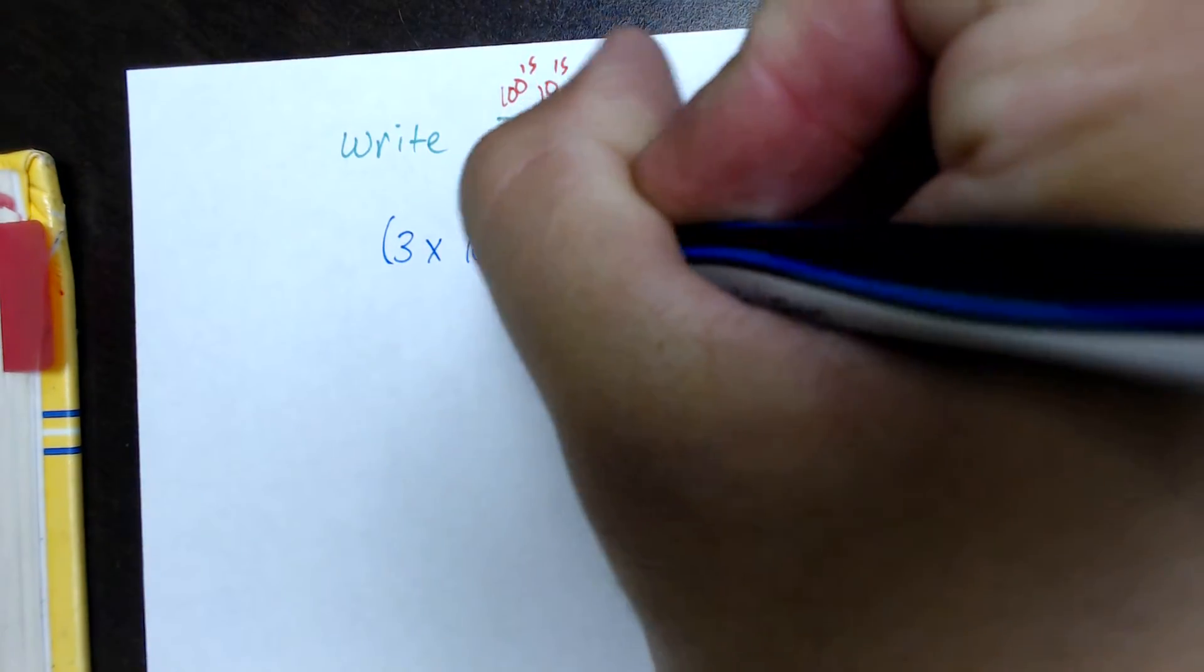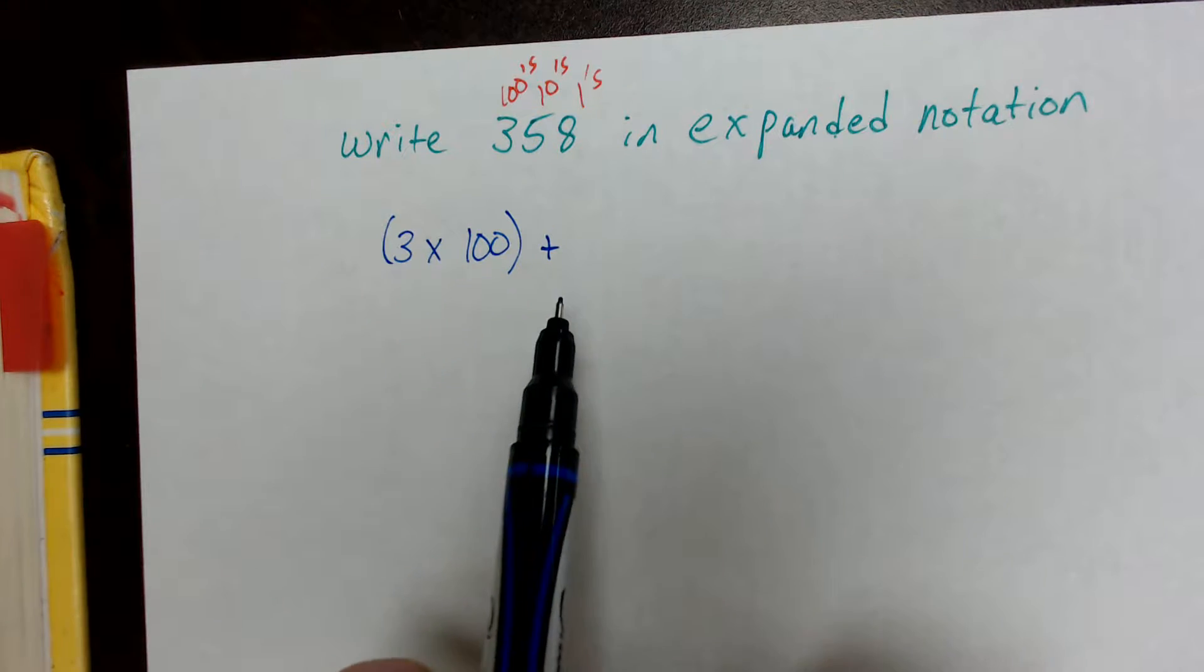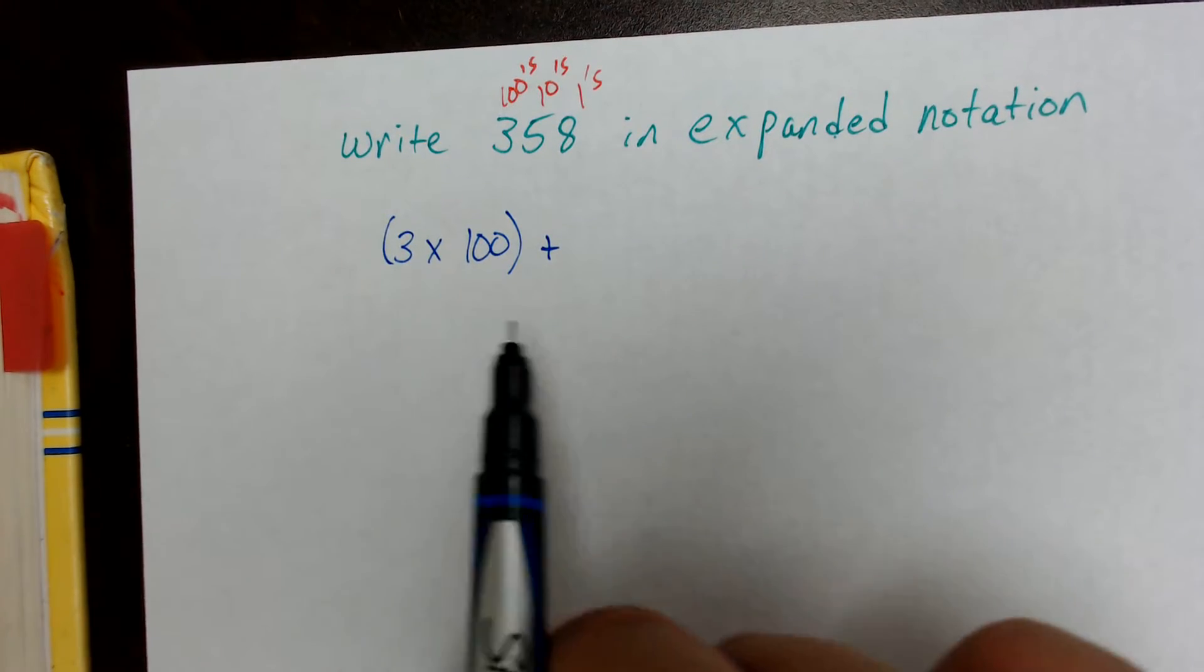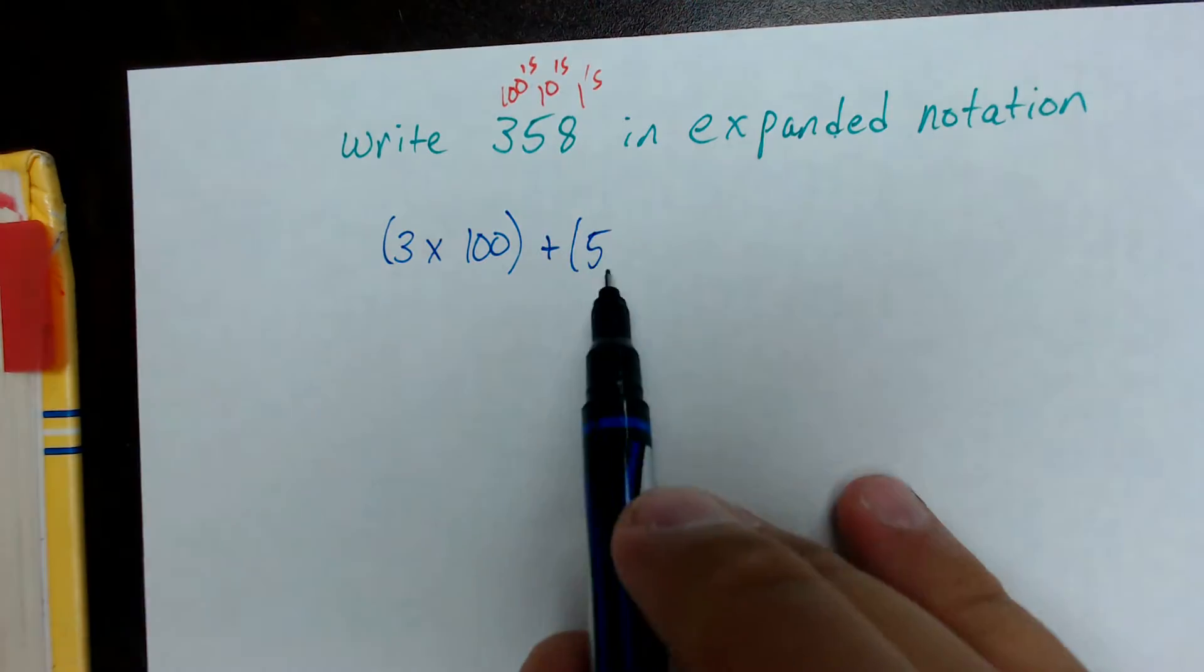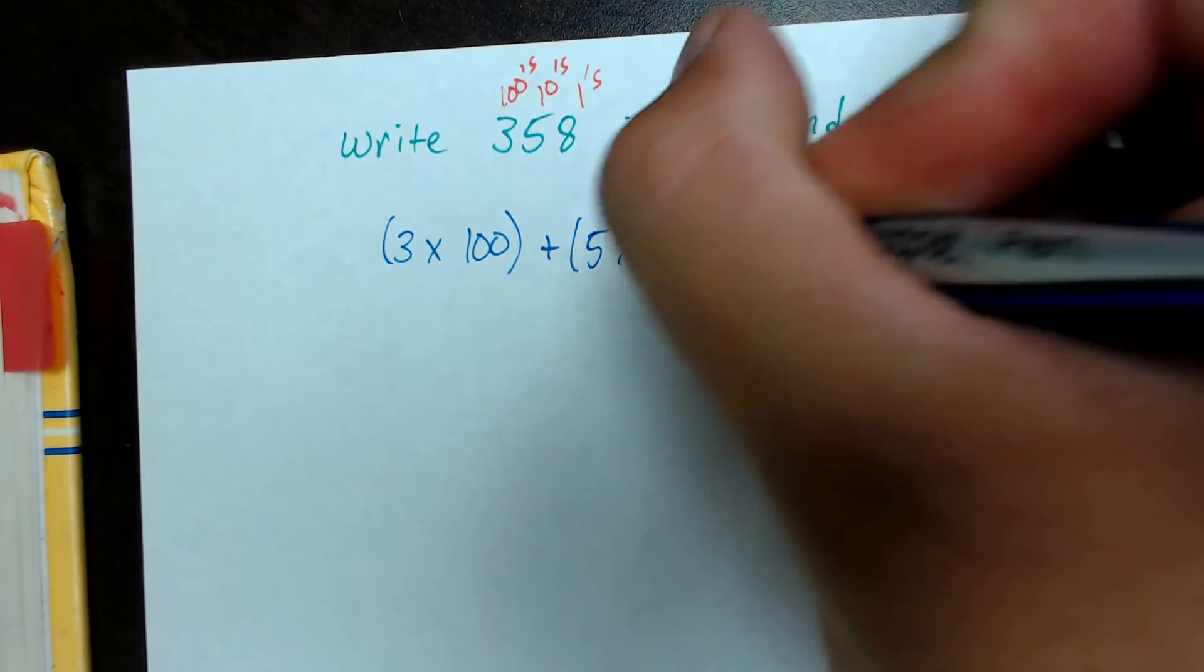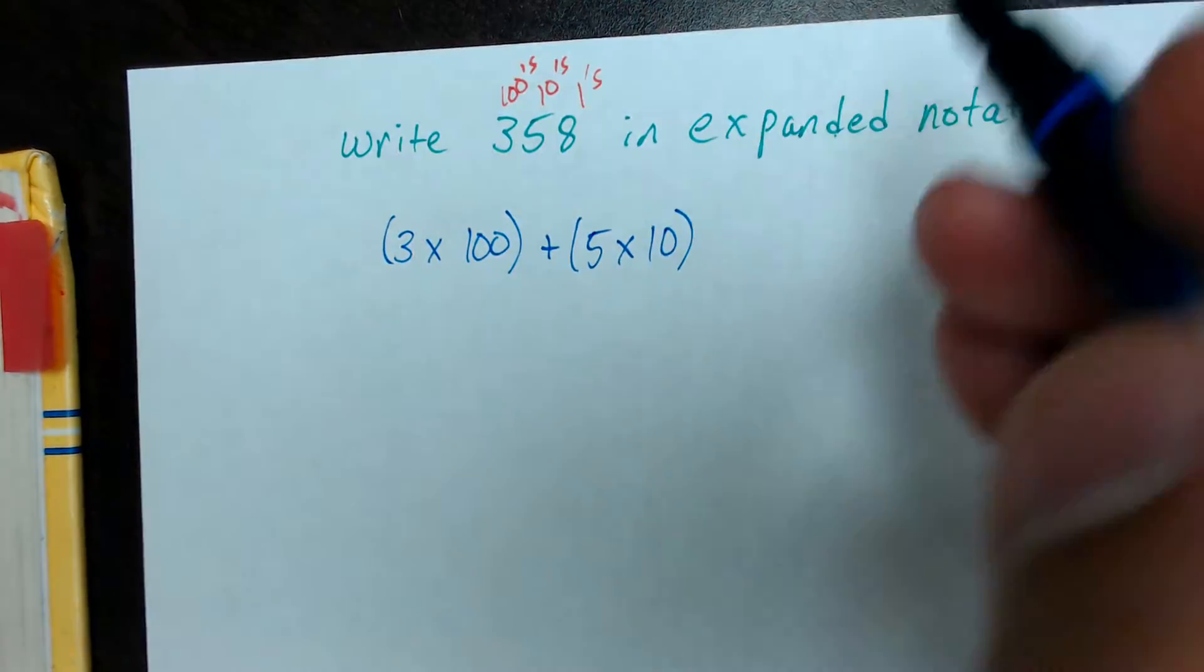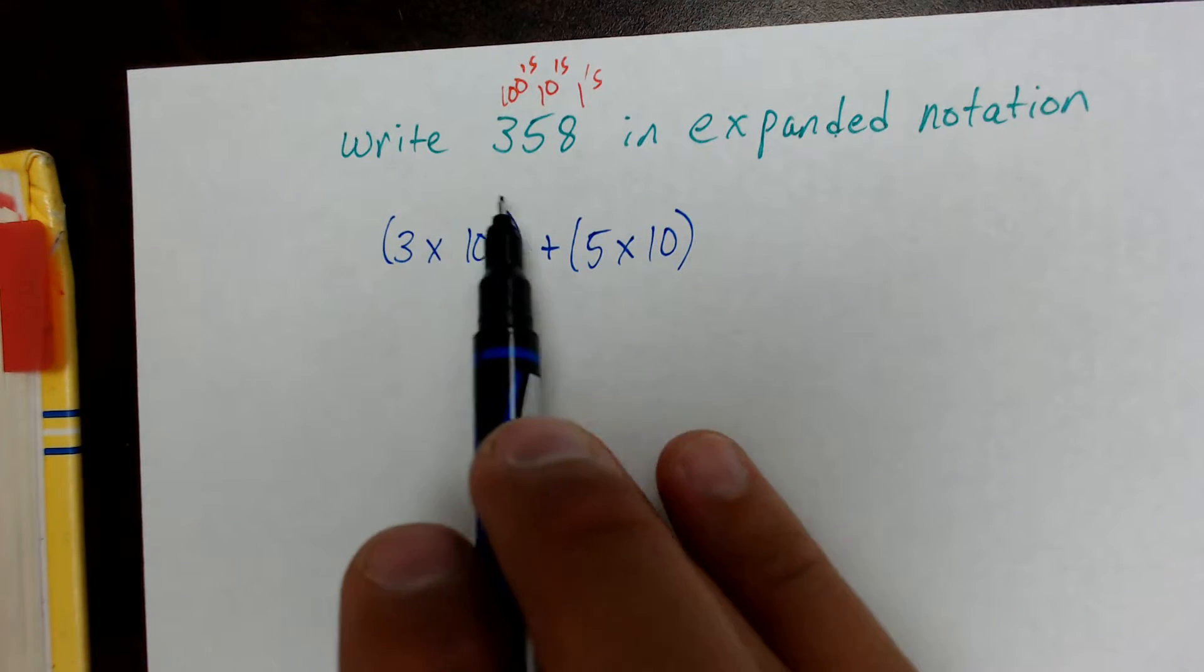Then we put a plus sign. This is very important. In between each place value, you have to put a plus sign. So 3 times 100 plus the next digit, which is 5. And then 5 is going to be multiplied by its place value of 10s. So I'm going to put plus 5 times 10 because the 5 in this number actually has a value of 50, not just 5. So 350.